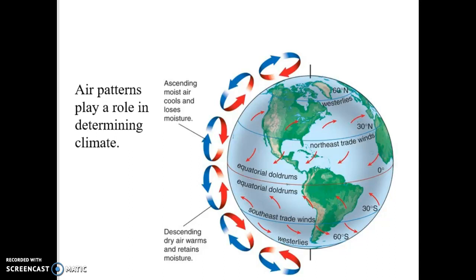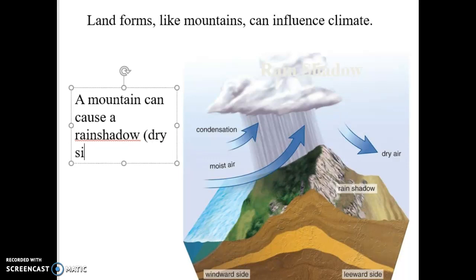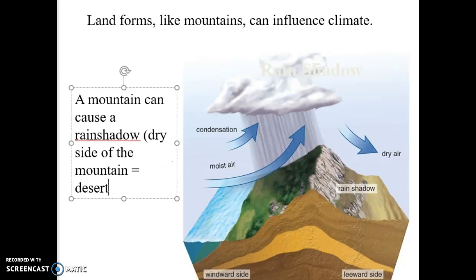The other major feature we want to mention when we talk about climate are things like landforms, mountains, big wide-open stretches of prairie. Land-based features can influence climate. With the mountain example, a mountain can cause a thing called a rain shadow. The rain shadow is a dry side of the mountain. If you have a dry side, that usually equals a desert type of biome, a hot, dry climate.